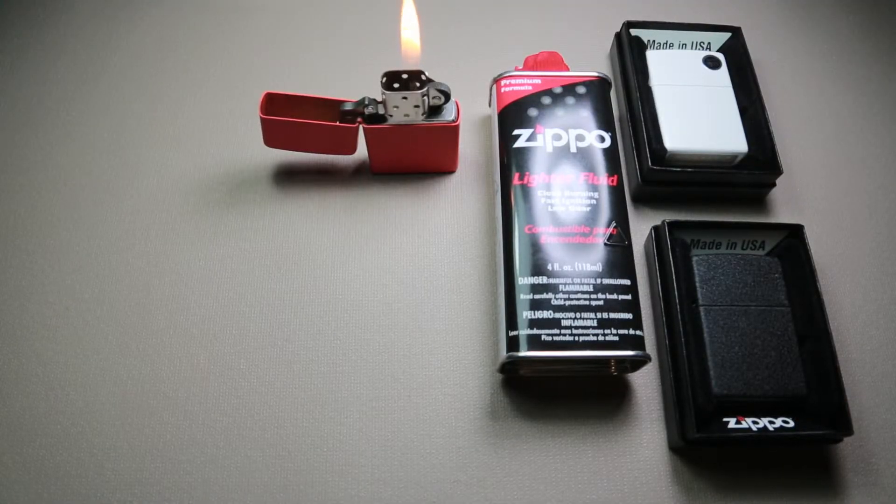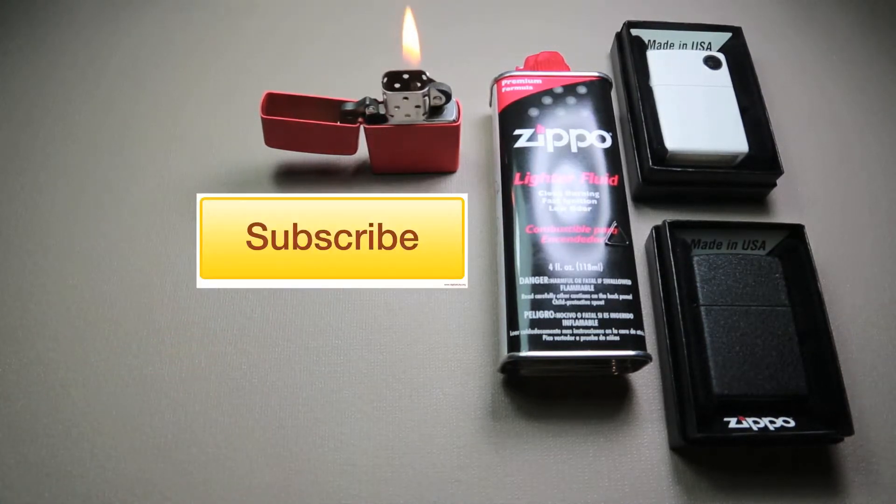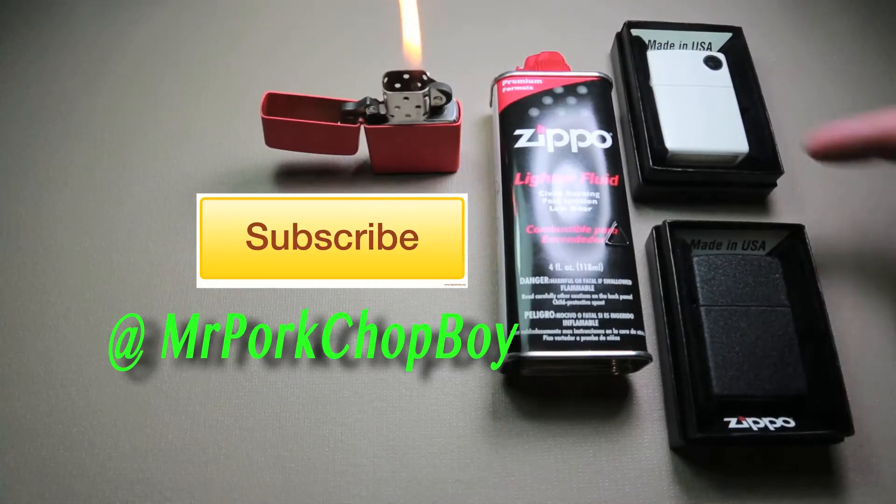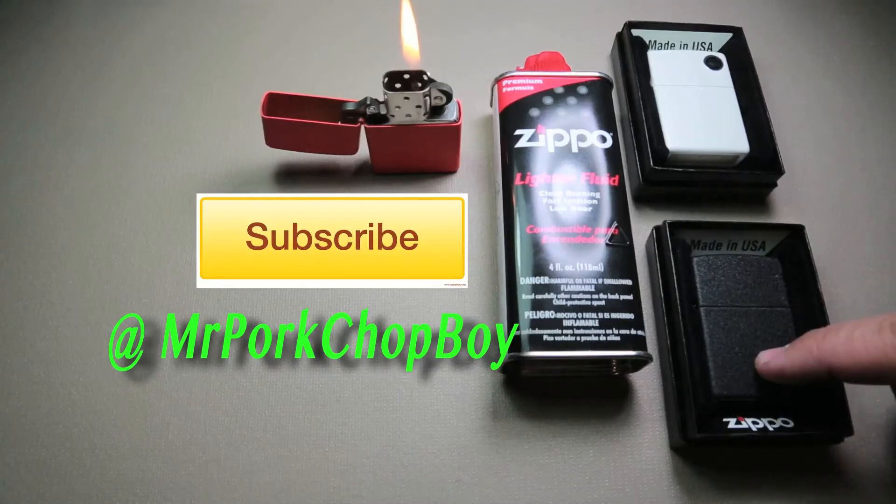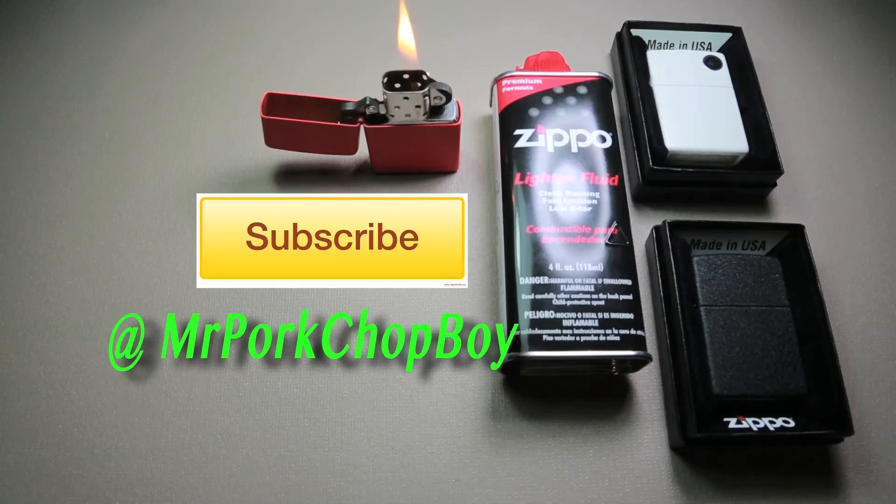If you would like to subscribe to me, you can press right here and that will take you to a separate page. If you would like to follow me on Twitter, this is how you spell my Twitter name: mr porkchop boy, just like on YouTube. If you want to see the unboxing of either this black crackle Zippo or this matte white Zippo, you can press on either Zippo. Thank you very much and have a great day.